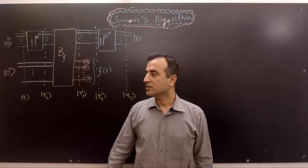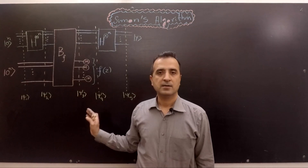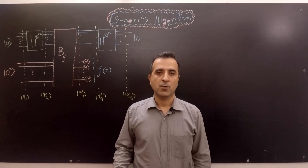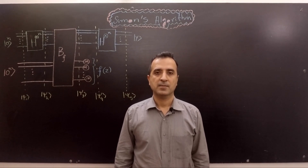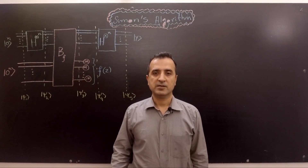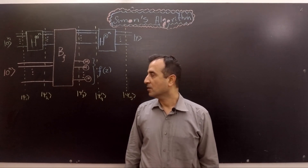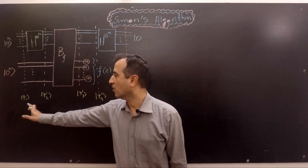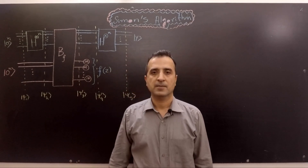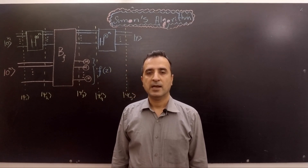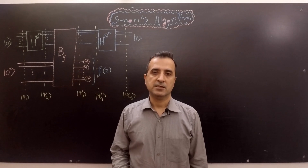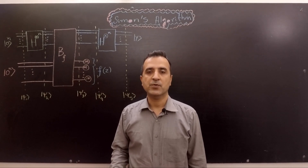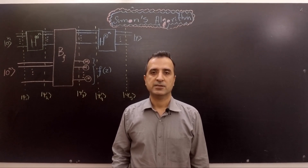I have drawn the quantum circuit that solves Simon's problem in polynomial time. Furthermore, I have also marked different stages of this circuit. We will analyze each stage and see how the input is transformed at each stage.